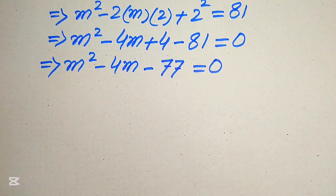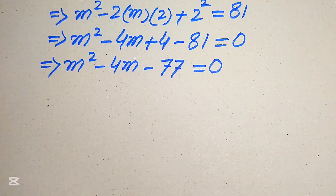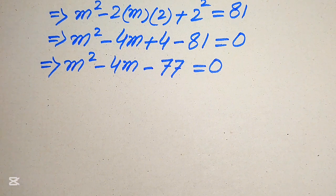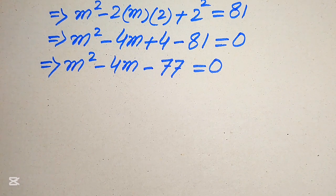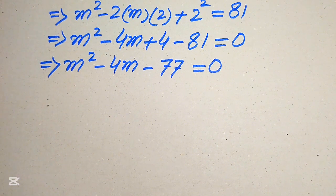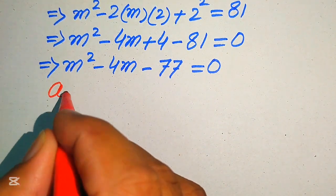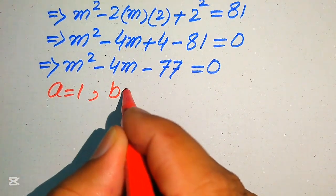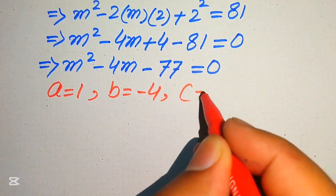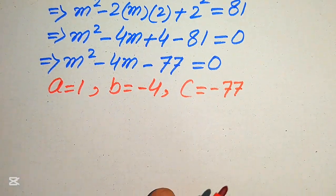This is now a quadratic equation in standard form in variable m. There are four methods to solve a quadratic equation: graphical method, factorization, completing the square, and the quadratic formula. Here we solve using the quadratic formula. The coefficients are: a equals 1, b equals minus 4, and c equals minus 77.